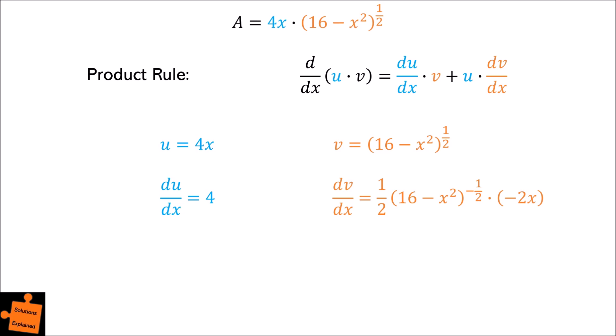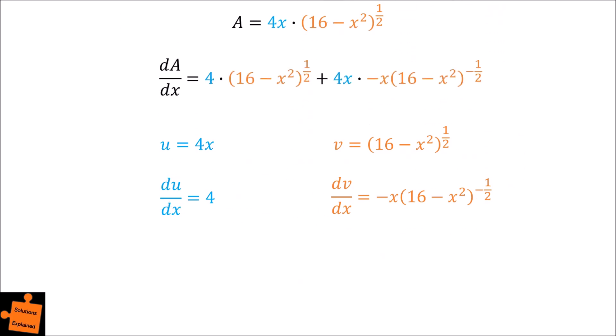If we simplify this, we obtain dv by dx is equal to minus x, multiplied by 16 minus x squared to the power of minus 1 half. We can now substitute all of this into the formula for the product rule to obtain an equation for the gradient dA by dx.